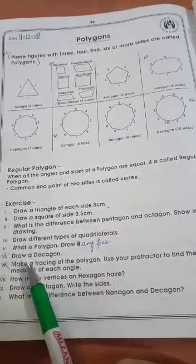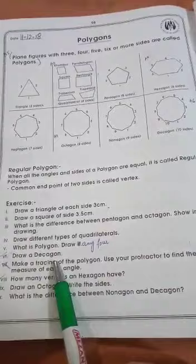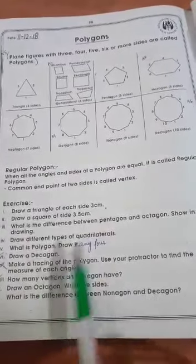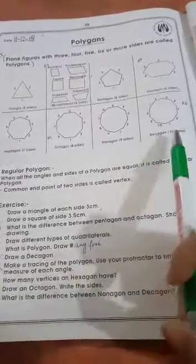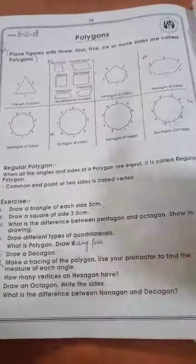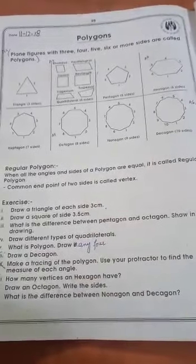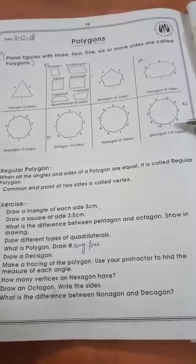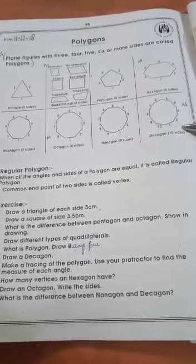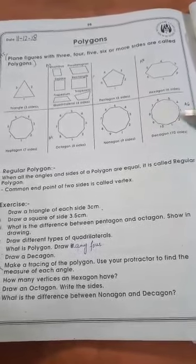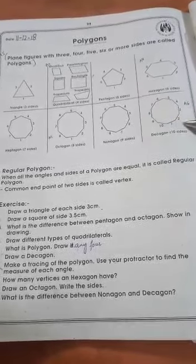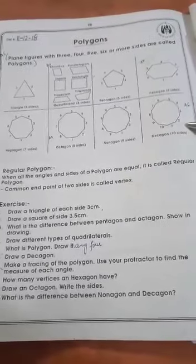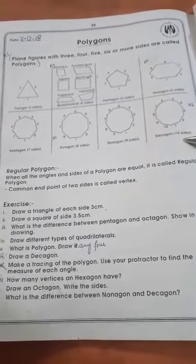Question number 6 is: draw a decagon. The decagon is a ten-sided figure. Ten-sided figures are called a decagon. It is given in this column. We have made the ten-sided figure, added numbering, and will write its name.